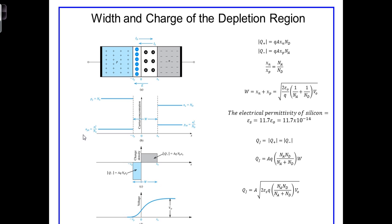N-sub-P-0 is the equilibrium concentration of the minority carrier electrons on the p-side. Similarly, on the n-side, N-sub-N is the electron carrier concentration on the n-side, and it's just equal to N-sub-D, the donor doping concentration. And P-sub-N-0 refers to the thermal equilibrium hole concentration on the n-side. Any holes that exist on the n-side are due to thermal generation, and the equilibrium value we call P-sub-N-0.